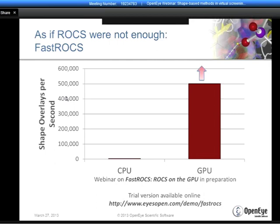We have a few minutes for questions. For anyone interested in getting a license or doing an evaluation: if you are a nonprofit or commercial user, go to eyesopen.com and on the front page there is an evaluation request. If you're an academic user, there is an academic user request on the same front page. Fill in either of those forms—they're not too onerous—and we will get a license out to you relatively soon after that.